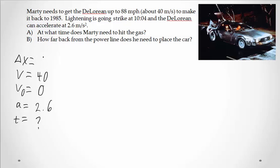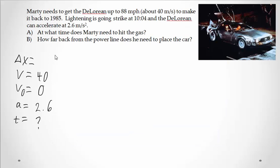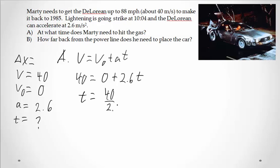We want to know at what time does Marty need to hit the gas. So we're just going to figure out how many seconds it's going to take to get up to speed. So this is what we want to find, it's time. Delta x for part A we don't care about. So V equals V0 plus AT. I've got my final velocity, I've got my initial velocity is zero, I've got my acceleration, and I've got my time. So I'm doing a little algebra. We're going to have 40 over 2.6, which is going to be approximately equal to 15.4 seconds.